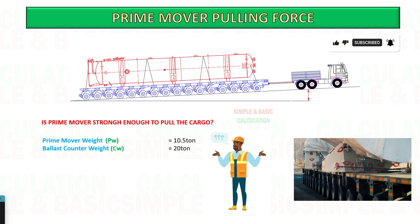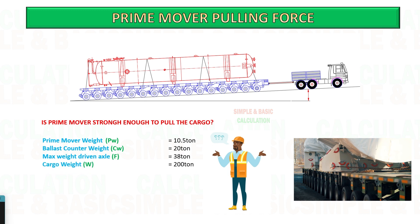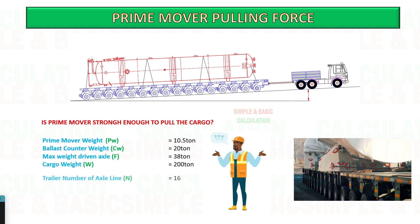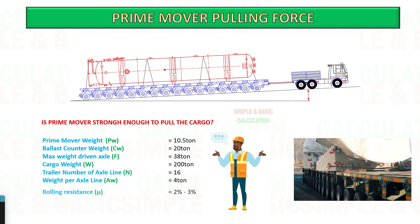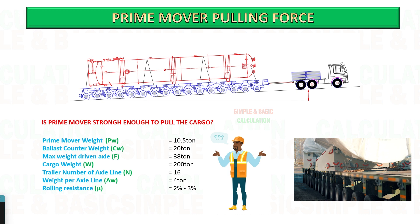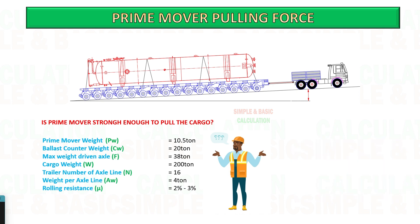The cargo is loaded into a 16-axle line trailer, and the weight of each axle line is 4 tons. Rolling resistance for asphalt is 2 to 3%. Calculate the pulling force of your prime mover to determine if it is enough to tow the cargo from location A to location B.